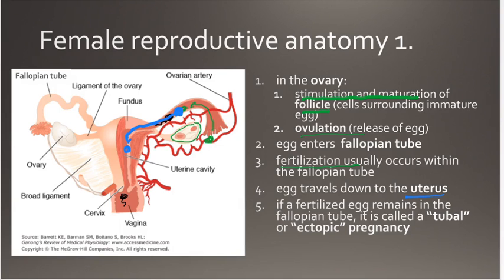So that fertilized egg is going to travel down to the uterus. If a fertilized egg doesn't travel down to the uterus but remains in the fallopian tube, that's called a tubal pregnancy, or an ectopic pregnancy, which means outside of. That can be very dangerous because as the embryo grows, it can rupture the fallopian tube and cause serious damage to the mother.